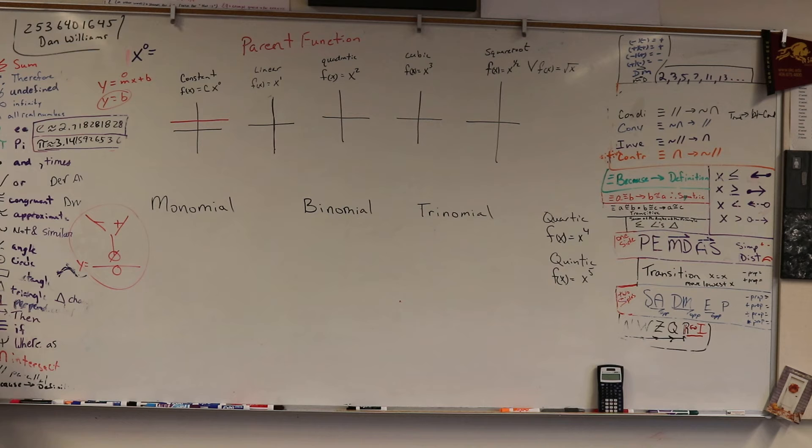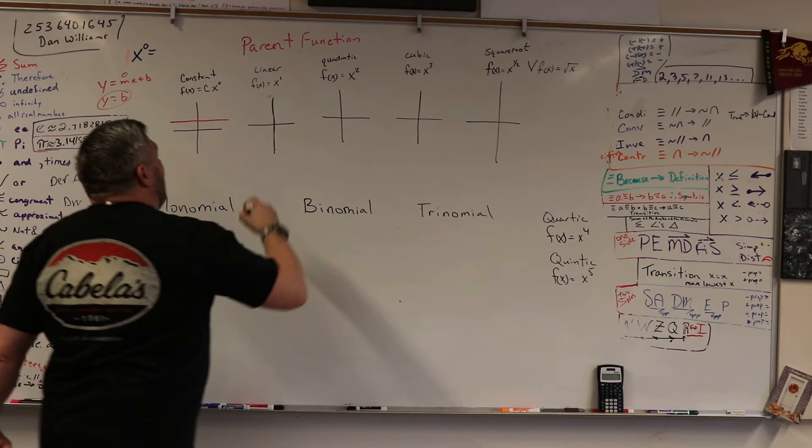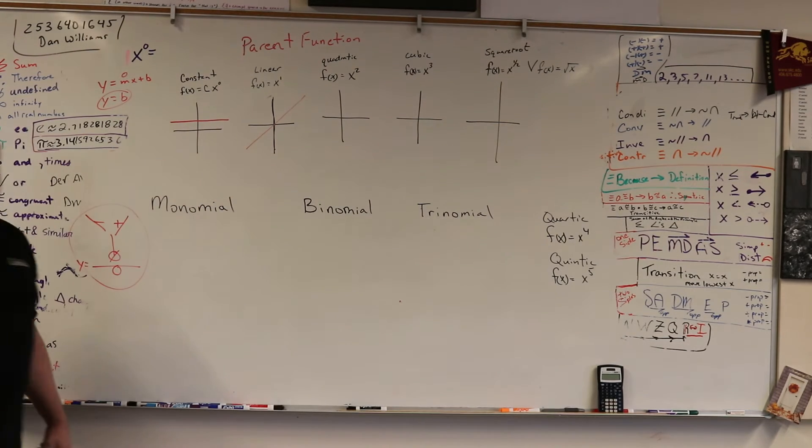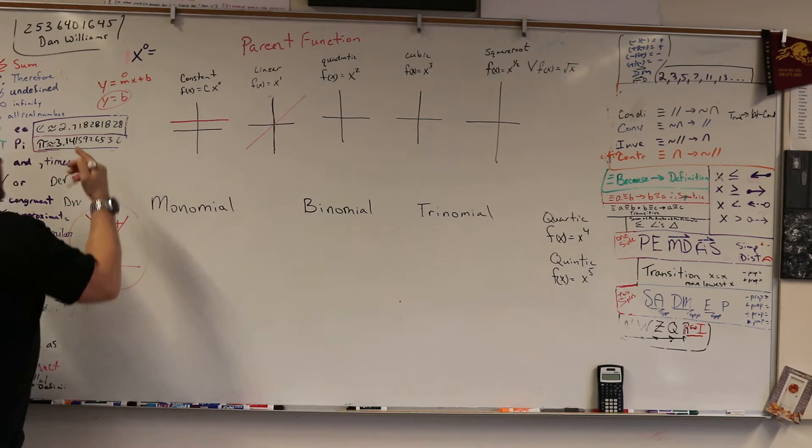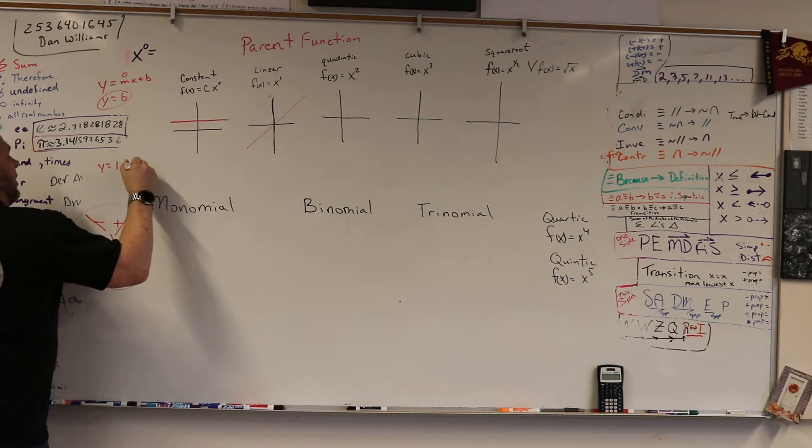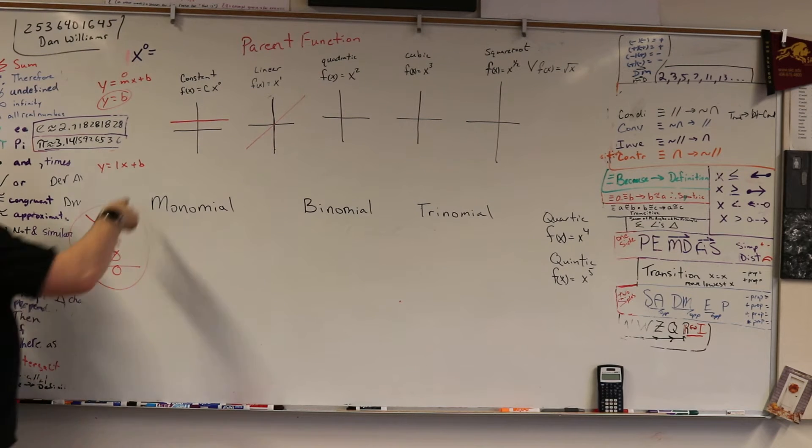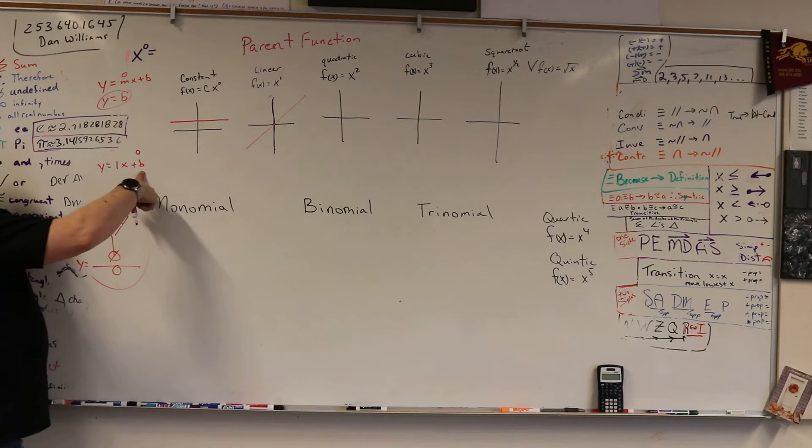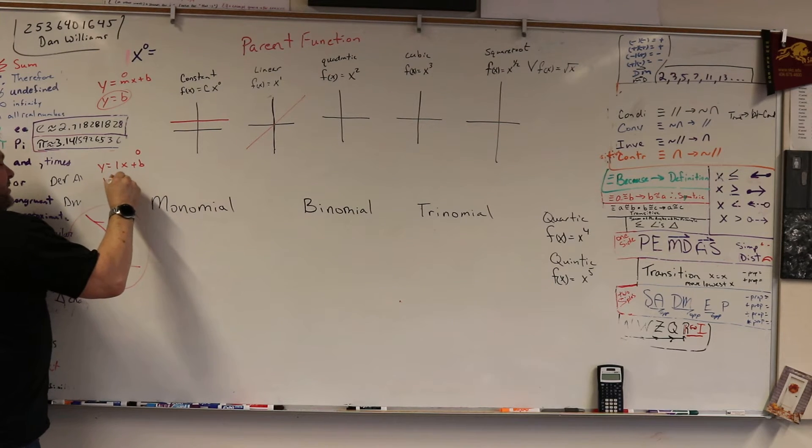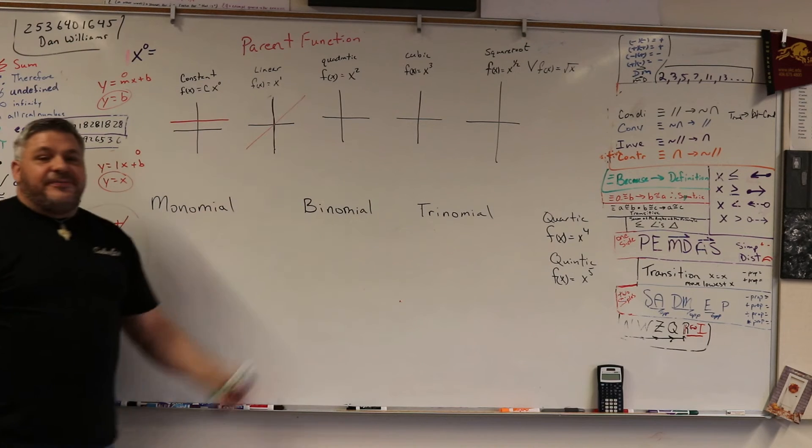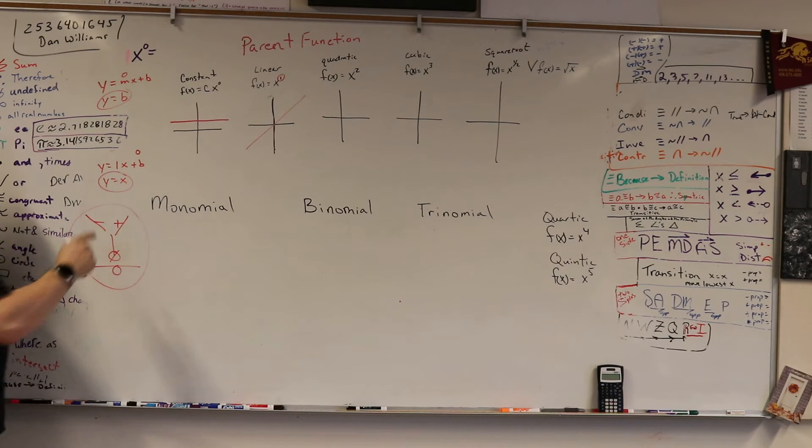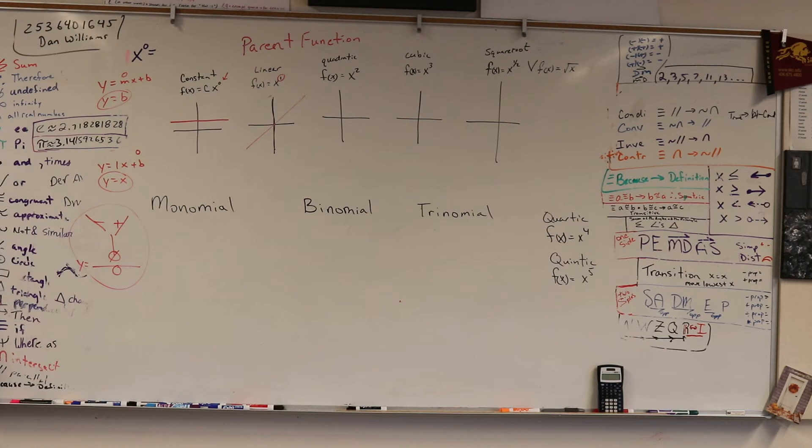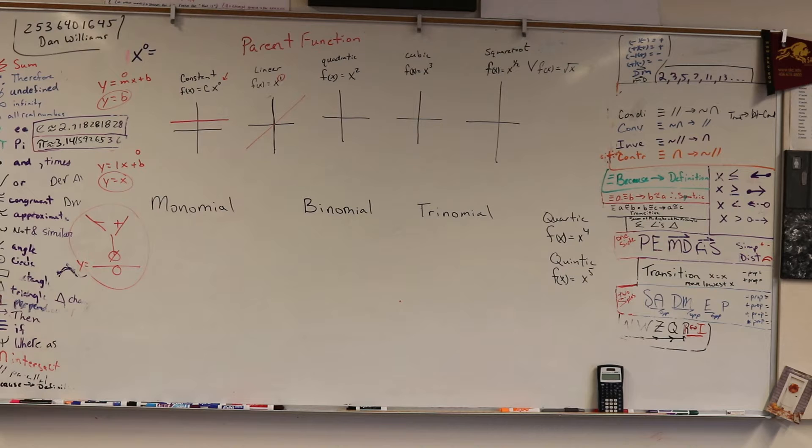Now, so then we got the linear function. The linear function looks like this. And that's the parent function. Remember, this is when the slope is one. When y equals one x plus b, right? But the b in this case is zero. So in this case, your b is zero, and it goes to y equals x, and that is your linear function.